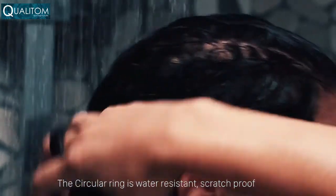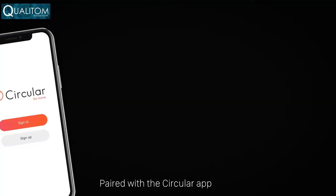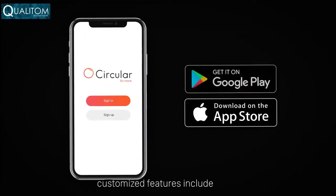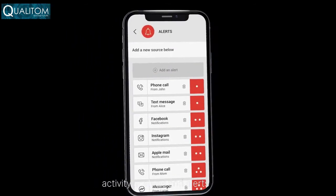The Circular ring is water-resistant, scratch-proof, has built-in data storage, and is only 4 grams. Paired with the Circular app, customized features include a smart alarm clock, intuitive sleep analysis, activity analysis, and alerts.